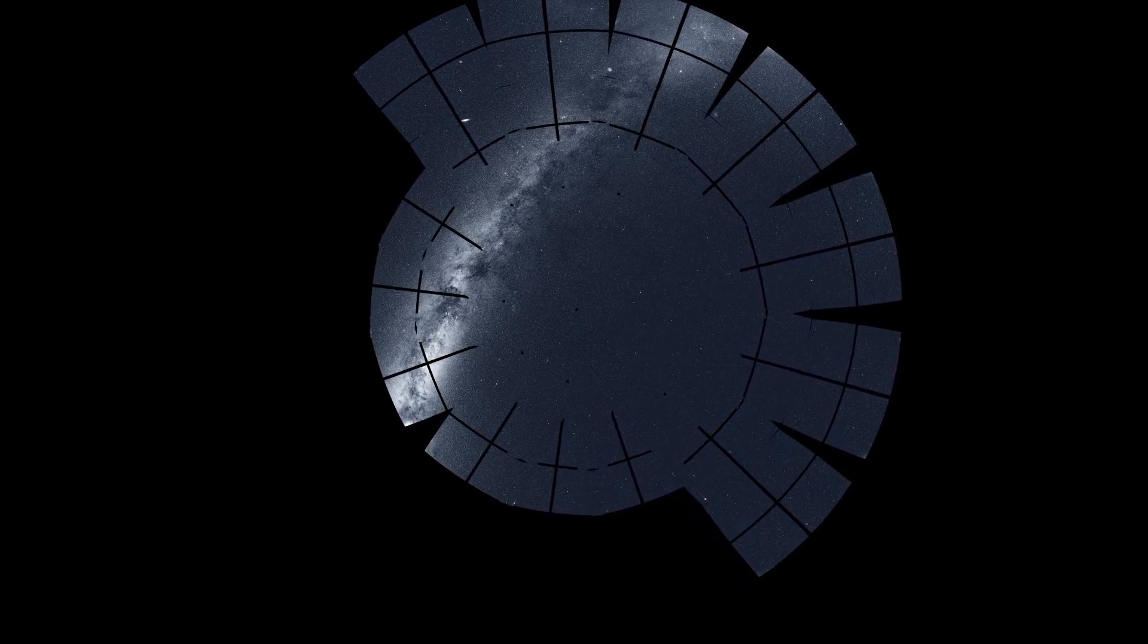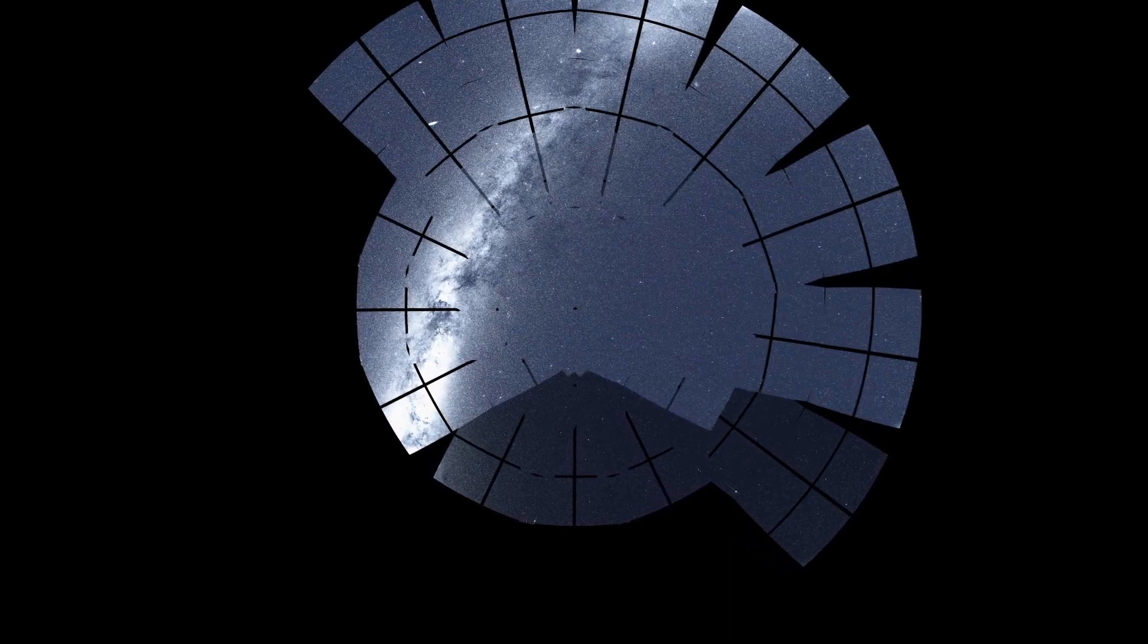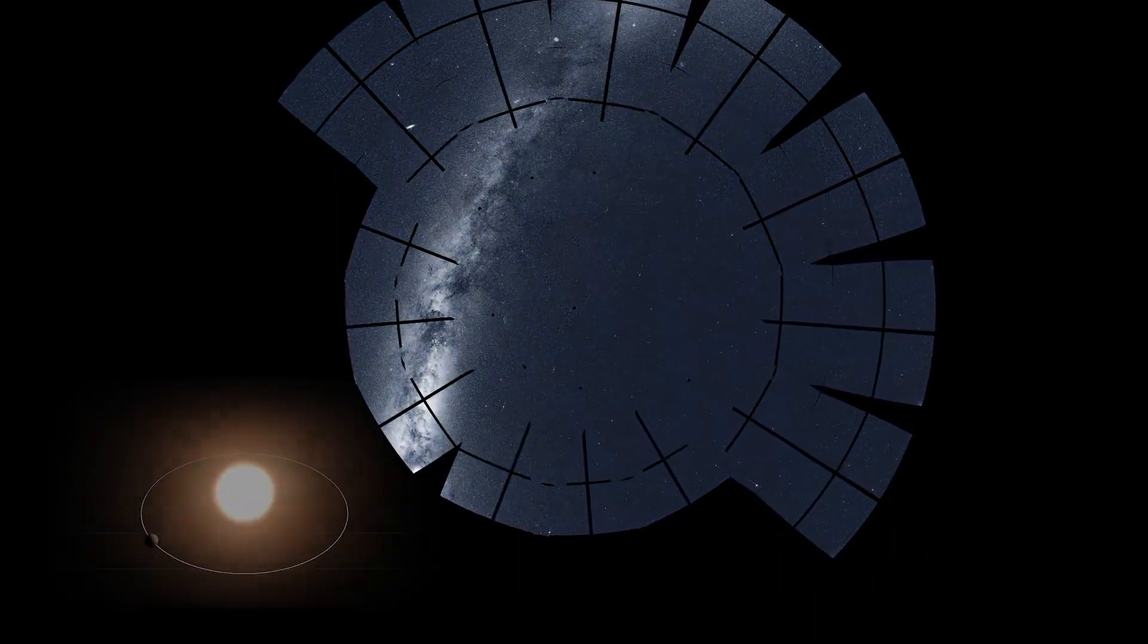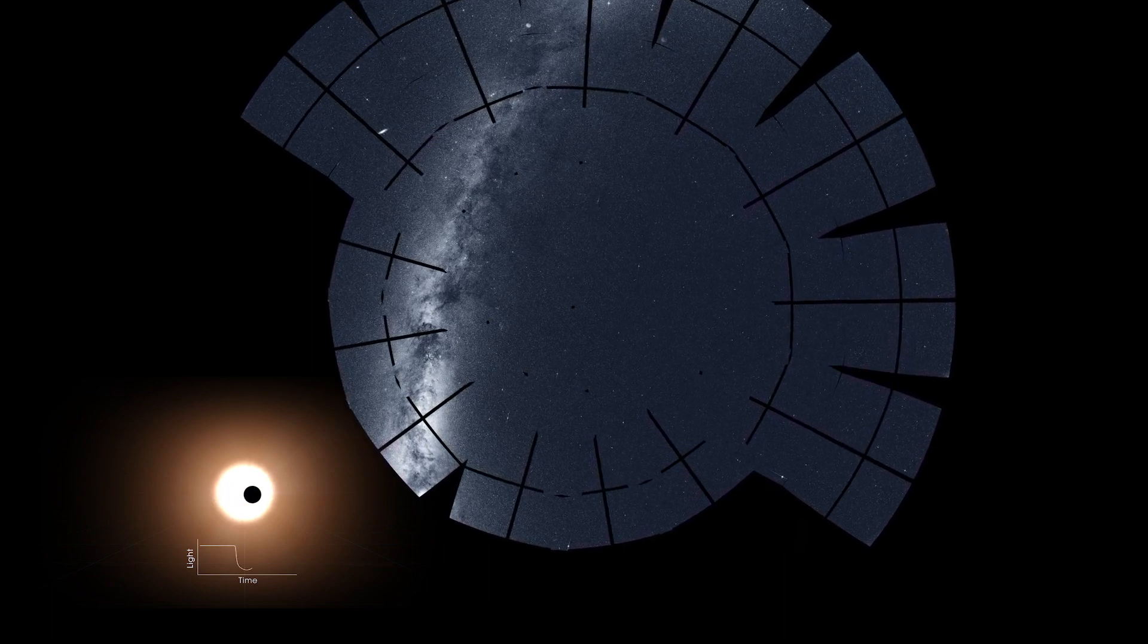To do this, TESS divided the northern sky into 13 sectors, and its four cameras monitored each sector for nearly a month. With these extended views, TESS looks for slight dips in starlight when distant planets pass in front of their host stars.